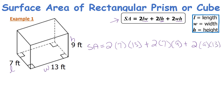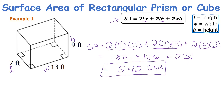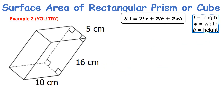Using order of operations — we multiply before we add — so 2 times 7 times 13 is 182, 2 times 7 times 9 is 126, and 2 times 9 times 13 is 234. Adding those together gives 542 square feet for this rectangular prism.